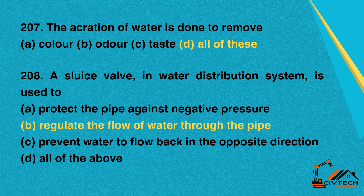Question 207: The aeration of water is done to remove. A. Color. B. Odor. C. Taste. D. All of these. Correct option: D. All of these.